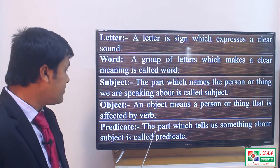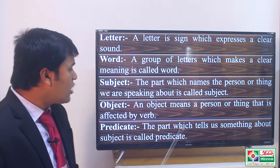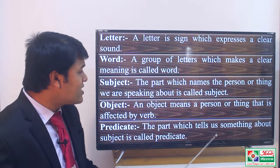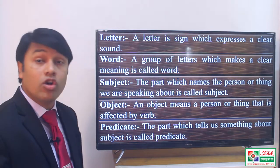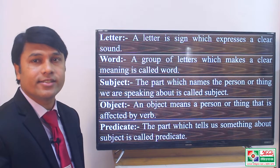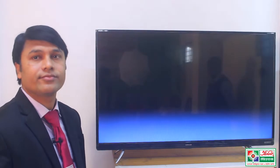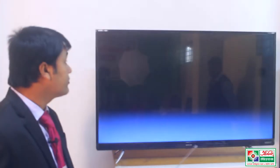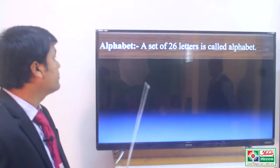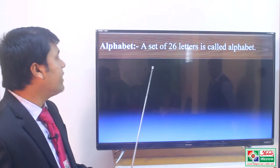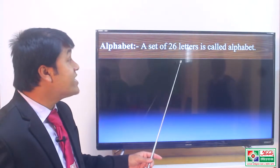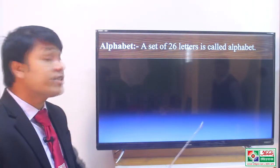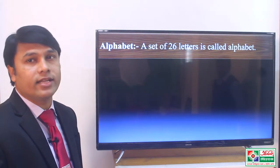Predicate. The part which tells us something about the subject is called predicate. Alphabet. A set of 26 letters is called alphabet.